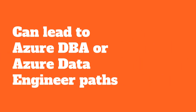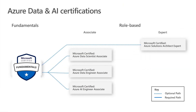If you take and pass the DP-900 exam, this could lead you into several database paths within Azure. You can go the database administrator route or the data engineer route. If we look at one of the recent publications from Microsoft, you can see that we have a fundamentals course — in this case DP-900 — and you have data scientist, data engineer, AI-related paths, or even the Azure Solutions Architect.